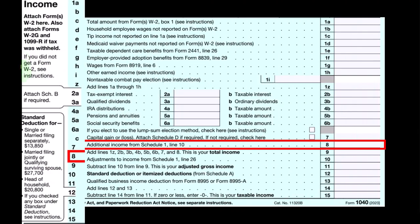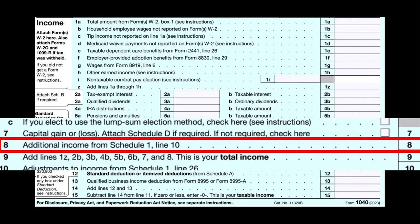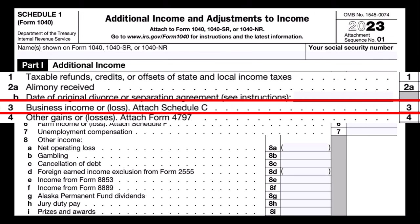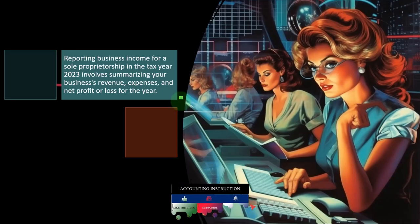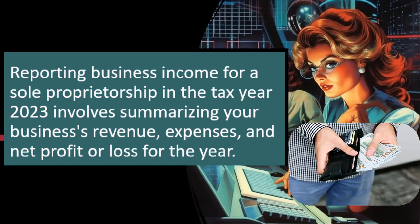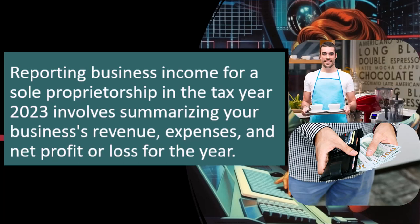On the first page of Form 1040, we're looking at line number eight, which has additional income from Schedule 1. Schedule 1 feeds into that line eight — additional income and adjustments to income. We're looking at line three of Part 1: business income or loss. This will typically flow in from Schedule C, which is basically an income statement for the business. We're reporting business income for a sole proprietorship in tax year 2023, which involves summarizing your business's revenue, expenses, and net profit or loss. This would be one item that could be included in income.